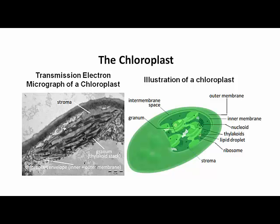Chloroplasts are also organelles surrounded by an inner and an outer membrane. In this case, the inner membrane invaginates — that is, grows inward — to form thylakoids, the stacked membranes seen in these illustrations.